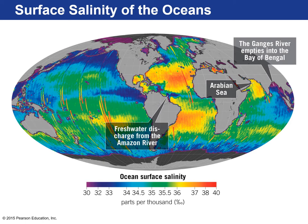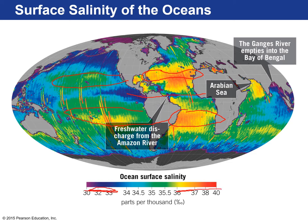There are salty zones along certain latitudes north and south of the equator — these are evaporation latitudes where there's more evaporation than precipitation, so the seawater is saltier. At the equator, shown in blue and purple, you have low salinity due to high precipitation. Areas in red and yellow indicate high salinity. Some areas like the Amazon River, Mississippi River, and Ganges River show lower salinity where fresh water runoff enters the ocean.